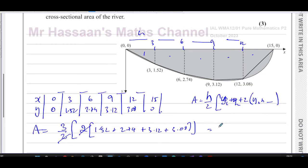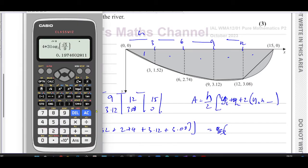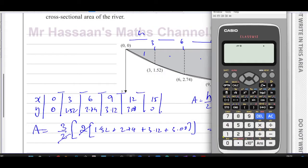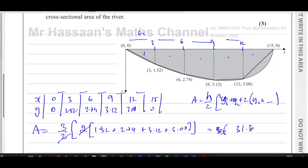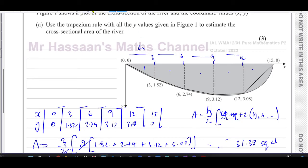Our area is going to be the distance between the parallel sides, which is three divided by two, that's h over two times 0 plus 0, the y values of the first and the last, which is going to be 0. And two times everything in between, two times 1.52 plus 2.74 plus 3.12 plus 3.08. The three and the two's will cancel out. So we end up with three times all of these added together. So I'm going to end up with three times brackets 1.52 plus 2.74 plus 3.12 plus 3.08. And that gives us 31.38 square units. So there's the answer to part A.